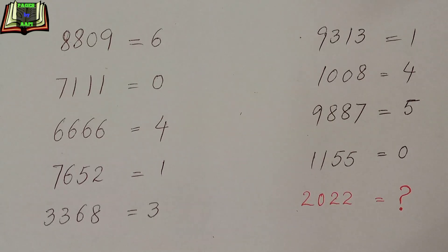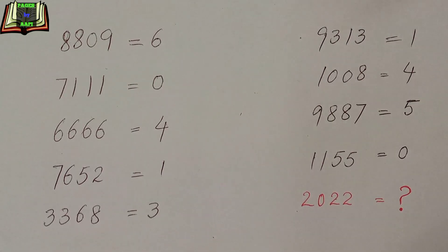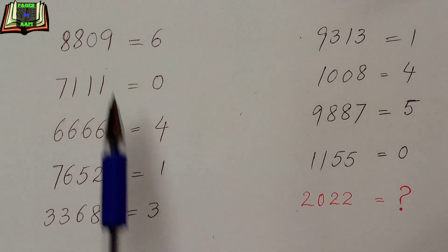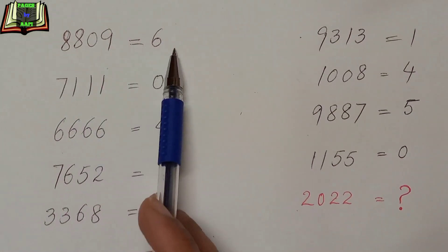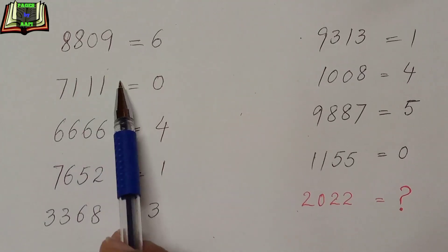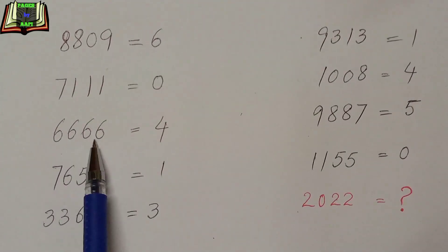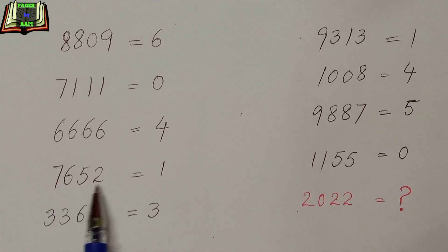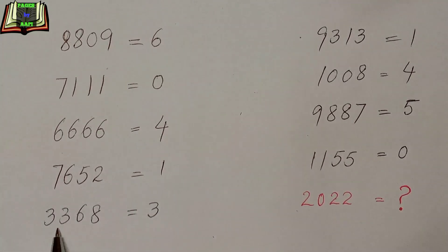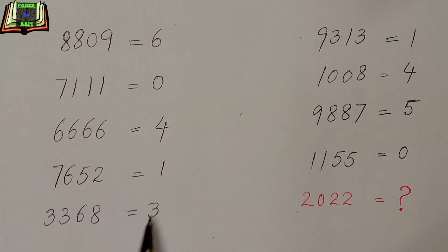In this puzzle we are given a few numbers and we have to find out the pattern of these numbers, and using this pattern we have to find out the unknown number. The given numbers are: 8809 equals 6, 7111 equals 0, 6666 equals 4, 7652 equals 1, 3368 equals 3.